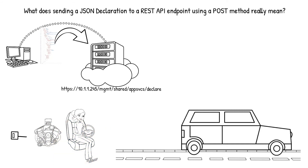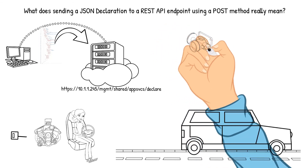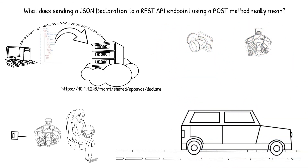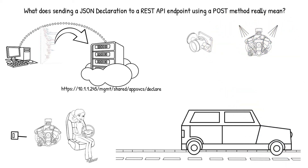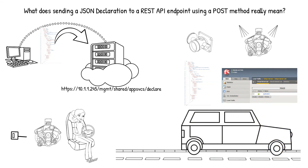The gas pedal understands the configuration and triggers multiple components to begin the process. The throttle is opened and an amount of air is regulated into the air intake while fuel is injected to maintain the air-to-fuel ratio. The engine understands how to convert the mixture into energy, like converting the written objects into virtual ones on the BIG-IP, and it makes the vehicle go just as the BIG-IP makes applications go.